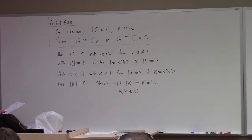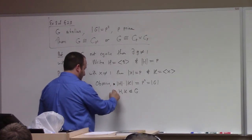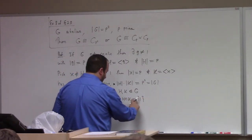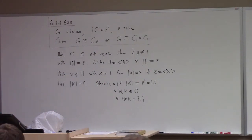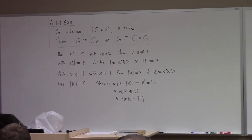We can also argue that H intersect K is just {1}. Why? Suppose it's not {1}. Then it's a subgroup of G whose only possible orders are 1, p, and p squared. So it can't be all of G. If the intersection wasn't {1}, then H would have to equal K, which contradicts the fact that x is not in H. So it must be that they intersect to be {1}.